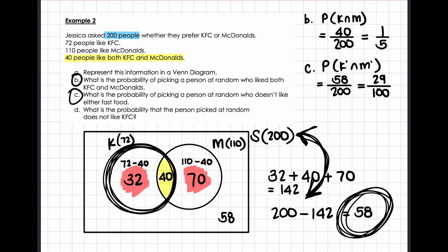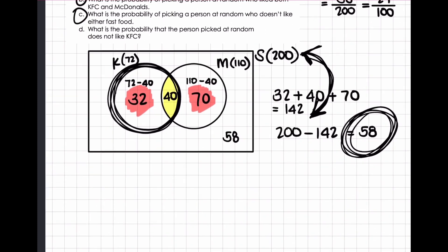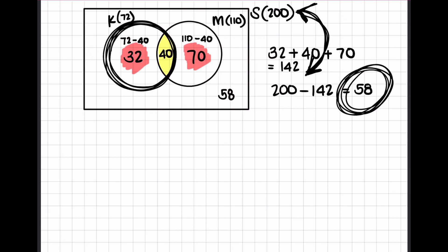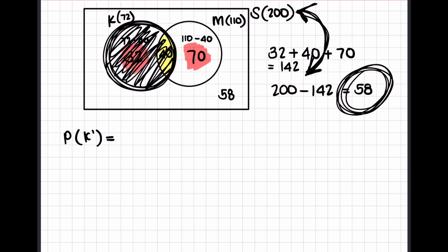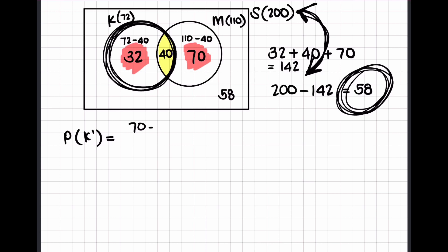Now, what is the probability that a person picked at random does not like KFC? There are two different ways we could write the answer. The probability that someone does not like KFC — who doesn't like KFC? It's the 70 people that like McDonald's only, plus the 58 people that don't like either fast food. So 70 plus 58 out of 200 people gives us 128 over 200, which simplifies down to 16 over 25.